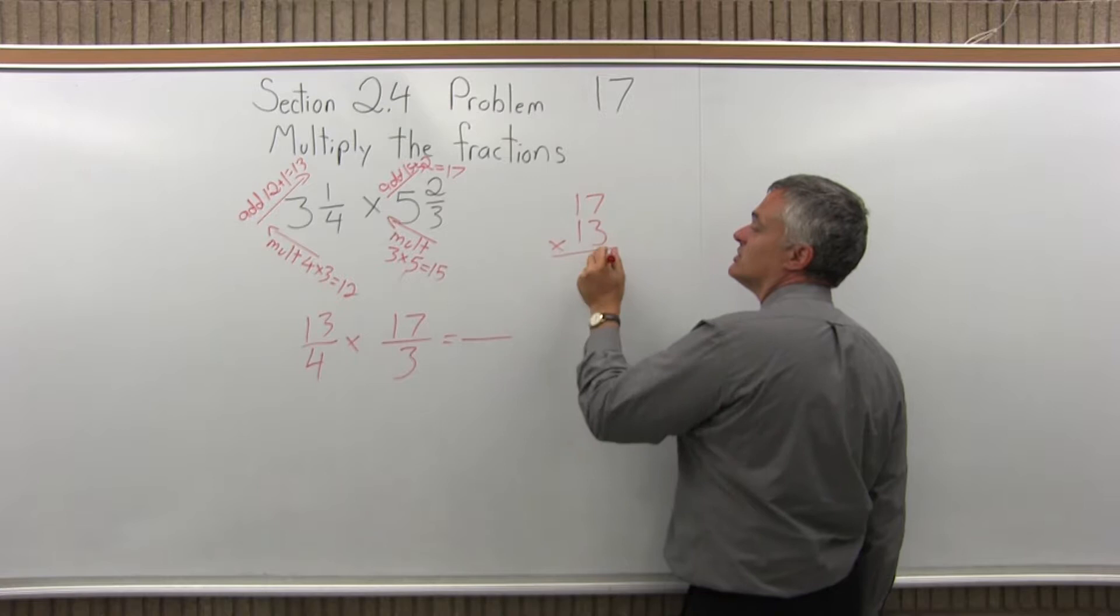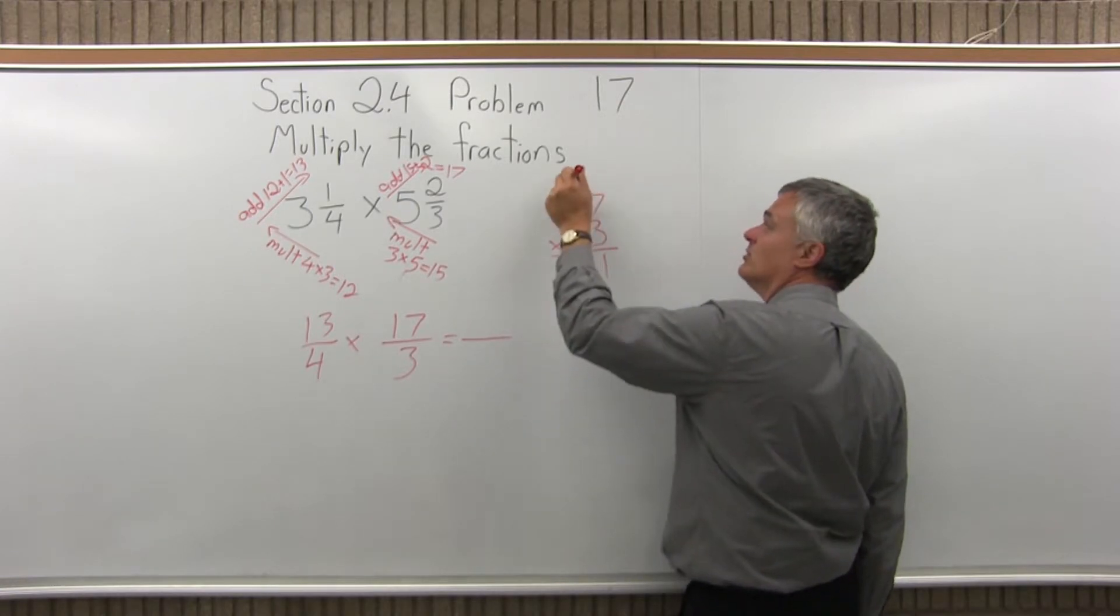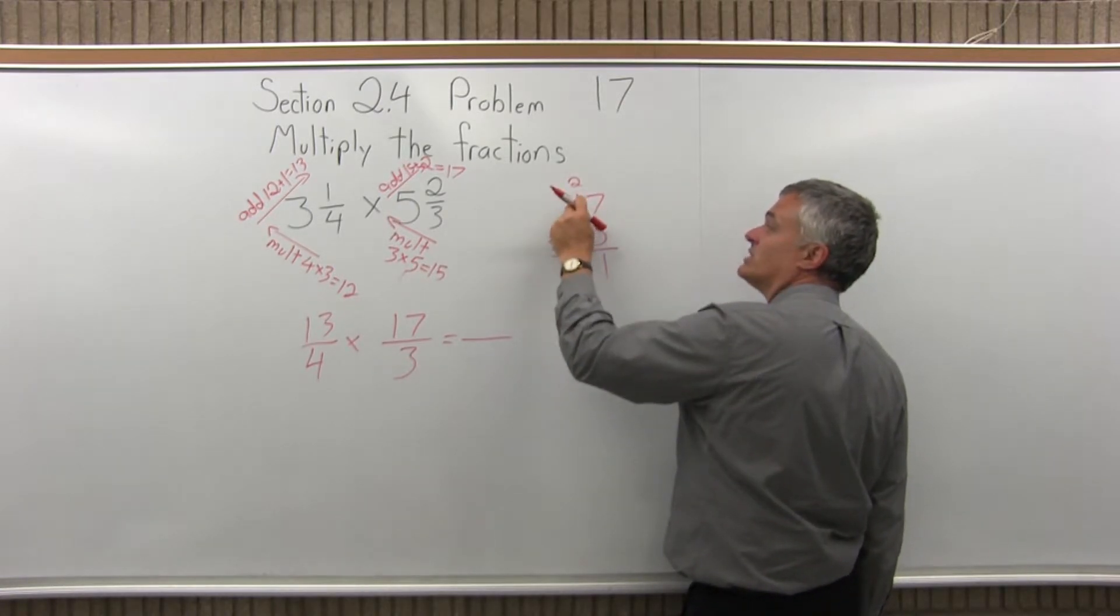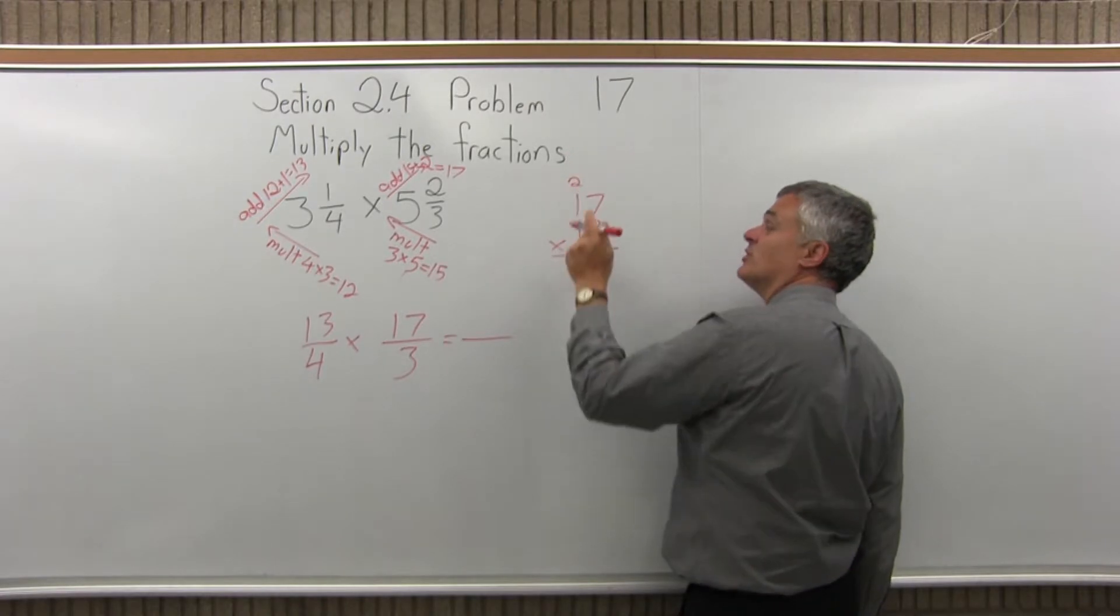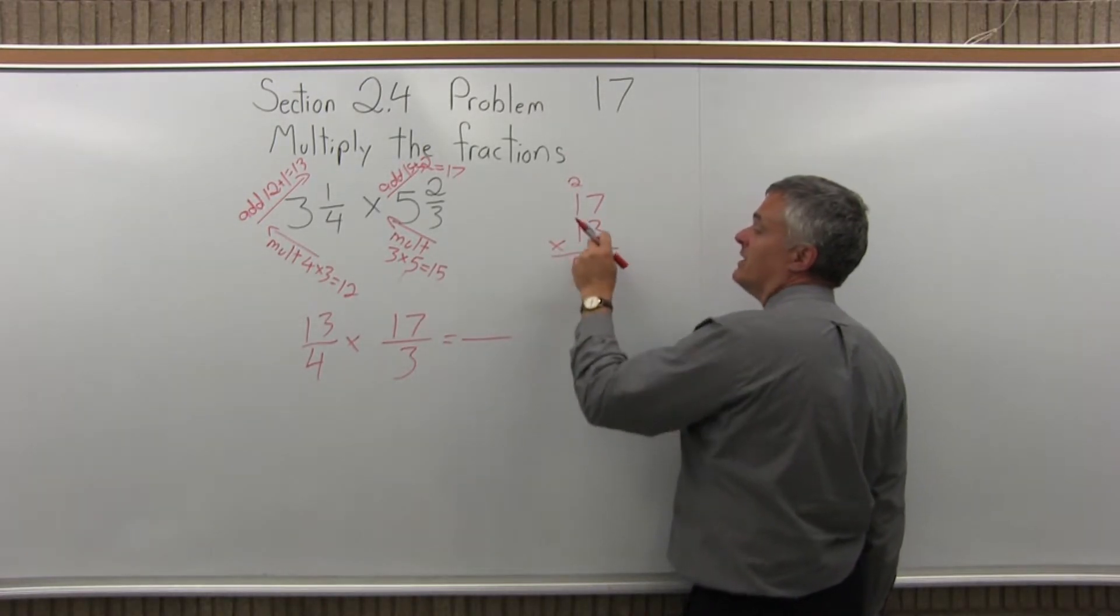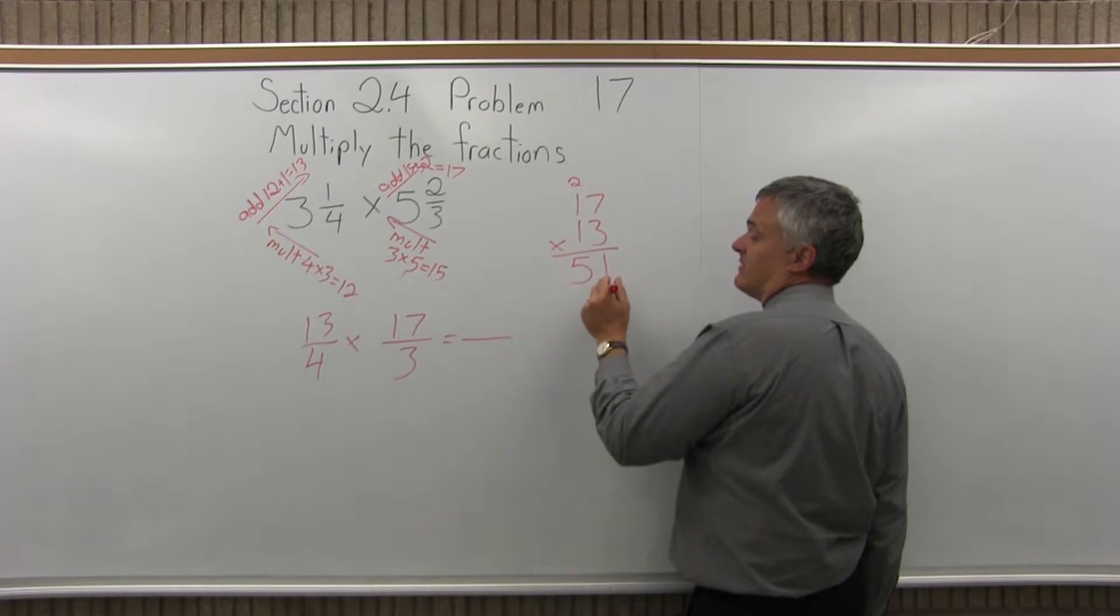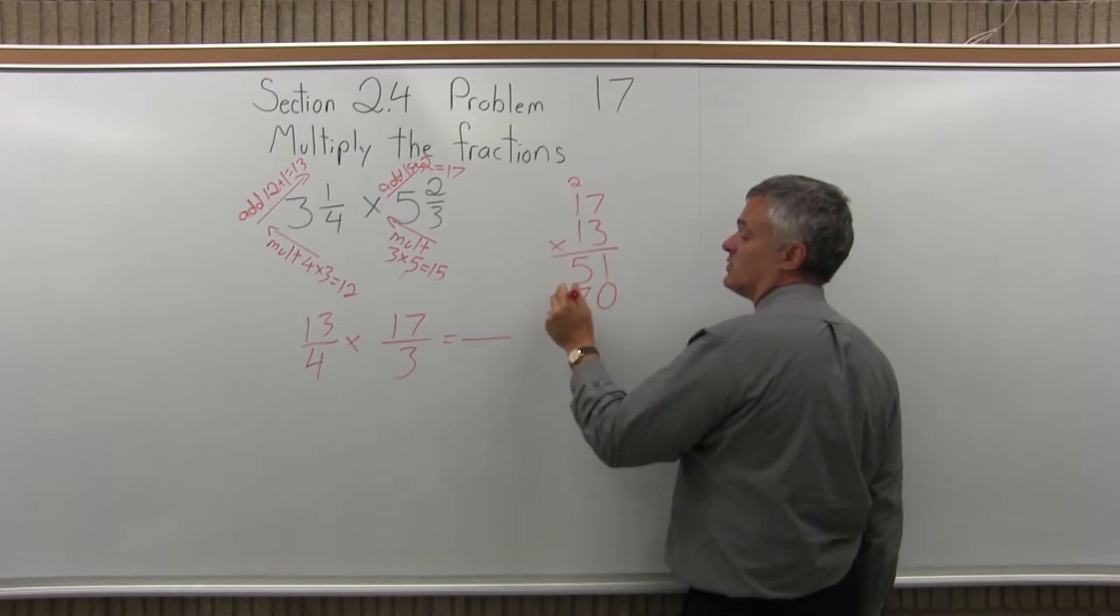So 3 times 7 is 21, write the 1, carry the 2. 3 times 1 is 3, then 3 plus the 2 more that I carried is 5, so I have 51. Then I multiply the 1 times the 17, so at first I put in a 0 to hold my place. 1 times 7 is 7, 1 times 1 is 1.